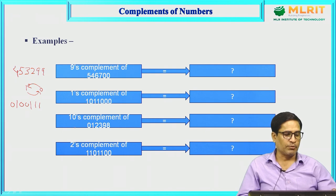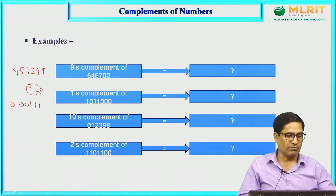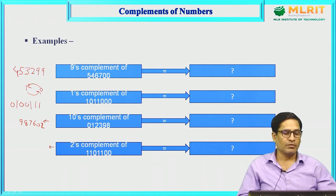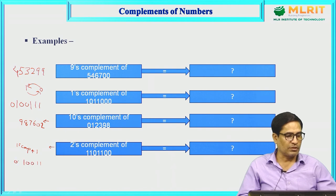For the 10's complement example: first obtain the 9's complement (subtract each digit from 9), giving digits 1, 0, 6, 7, 1, 8, 9 from right, then add 1 — so the last digit becomes 2. For the 2's complement: 1's complement gives 1, 1, 0, 0, 1, 0, 0 from right; adding 1 gives the final 2's complement result.